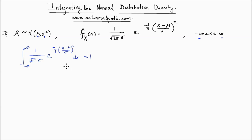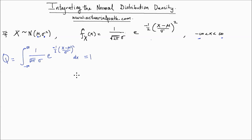What we want to do now is show that this integral — I'm going to call it Q — which is the integral from negative infinity to infinity of the normal distribution density, integrates to 1. Let me erase the equals 1 since that's what I want to show.